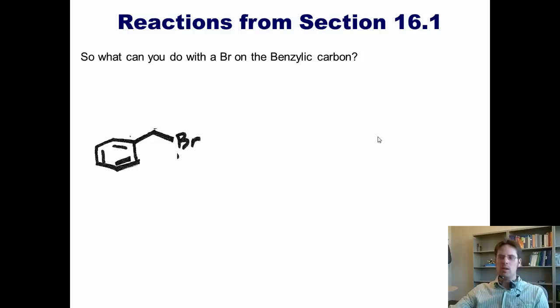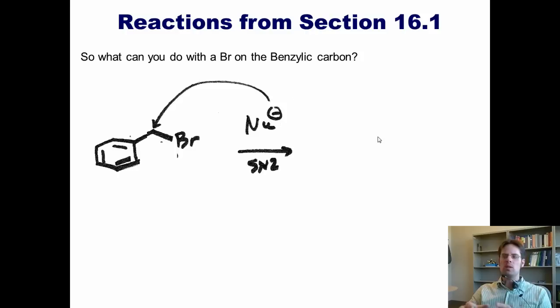As you may recall from chapter 8, a bromine is a really good leaving group, which means that if I react it with a nucleophile, the nucleophile can displace and substitute itself for the bromine. Thus, the nucleophile comes in, attacks the benzylic carbon, kicks off the bromide as a leaving group, and takes its place. This type of substitution reaction is called an SN2 reaction.